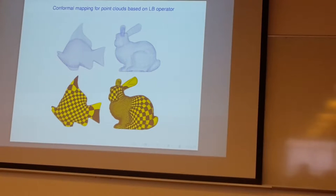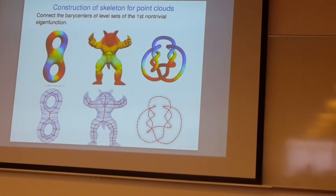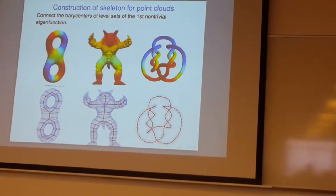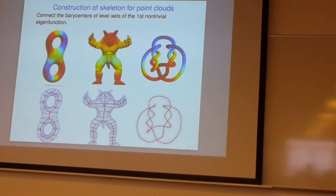We can do conformal mapping for point clouds based on the LB operator, minimizing the energy because you're really minimizing the harmonic energy. You can construct skeleton for point clouds - basically you find the eigenfunction first non-trivial and try to find the bi-centric level set by centers of level set. These little circular things are the level sets of the first non-trivial eigenfunction. Connect the bi-centric centers and that becomes the skeleton.